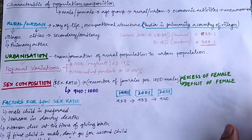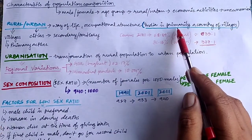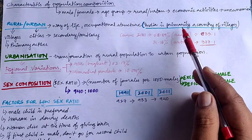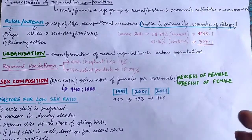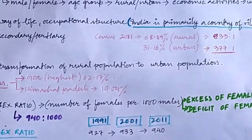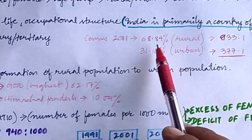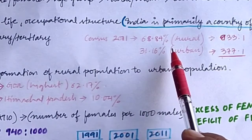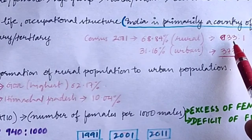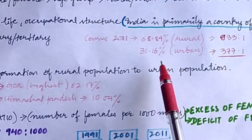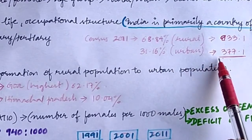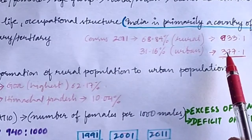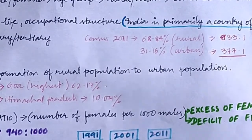India is primarily a country of village people — it is known as the country of villages because the rural population is more compared to the urban population. According to the Census of 2011, 68.84 percent of the population was living in rural areas, accounting for 833.1 million people, and 31.16 percent were living in urban areas, accounting for nearly 377.1 million people.